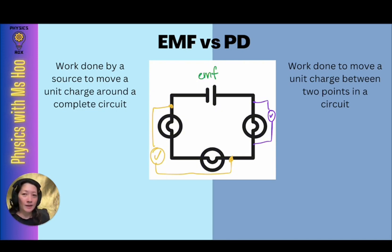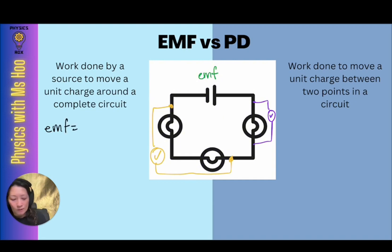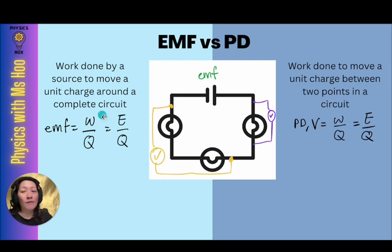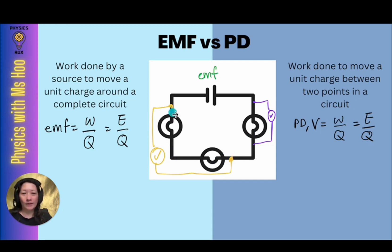For the formula of EMF and PD, because they're both voltages, the formula is actually exactly the same. EMF is calculated as the work done per unit charge, or also written as electrical energy per unit charge. PD, which is sometimes written as V, can also be calculated the same way: work done divided by charge, or electrical energy per unit charge. The formula is the same; you just need to be aware of when to use each. For EMF, the work done or energy used is across the entire circuit, whereas for potential difference, it's only for that section which we are measuring.